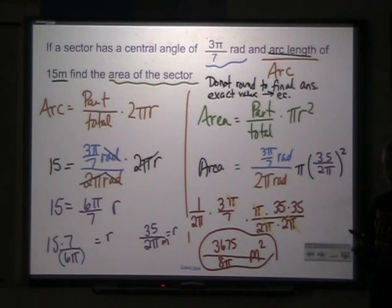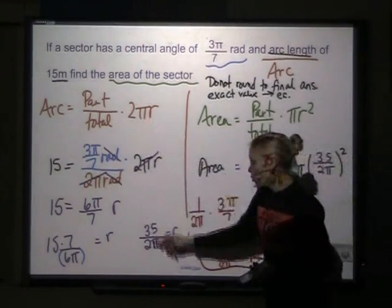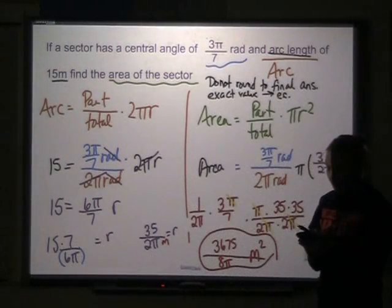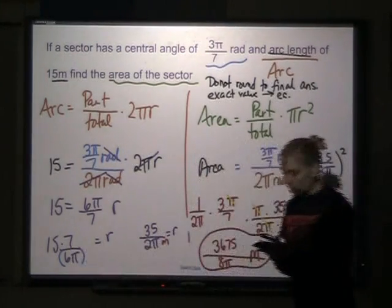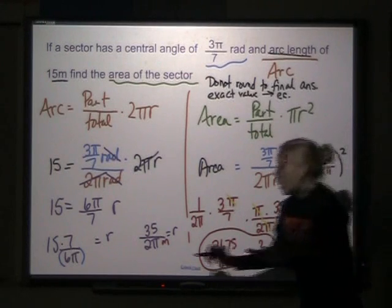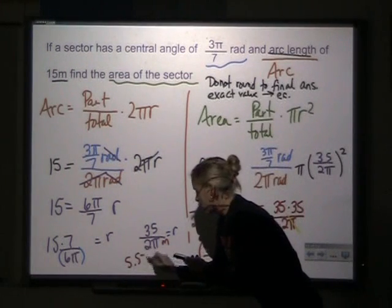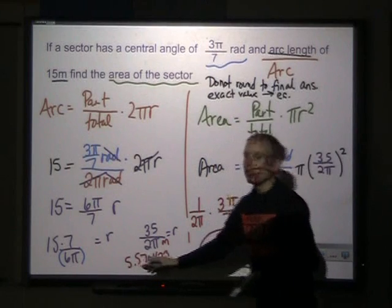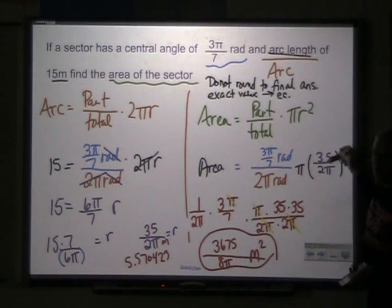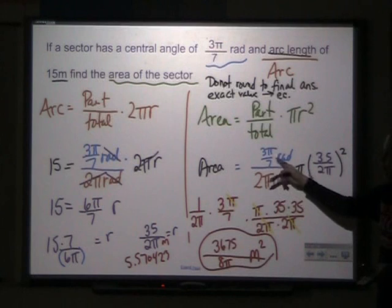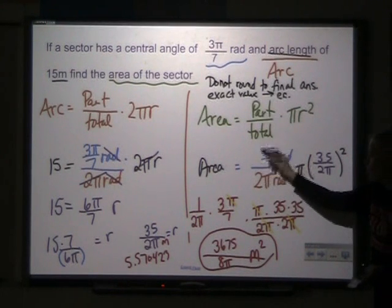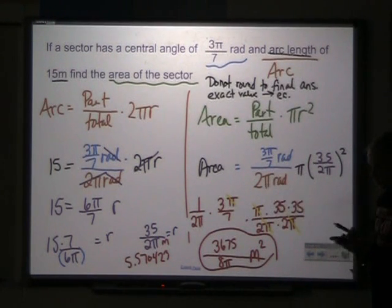Now, just in case you're going to do this problem without finding the exact value, when you go to do this problem and you put this in your calculator, you have to type 15 times 7 divided by parentheses 6π, or your calculator gives you the wrong answer. And you get 5.57042. Do not round this when you put it here. I'm going to square that value in my calculator. Multiply it by π. You cannot put π with a fraction. So when you go to put this in your calculator, I'm going to divide it by 2π. Again, I need parentheses.